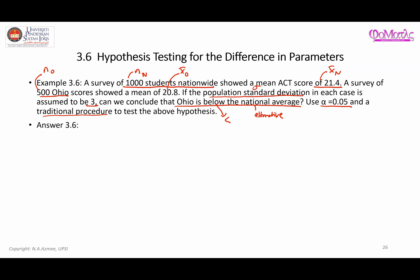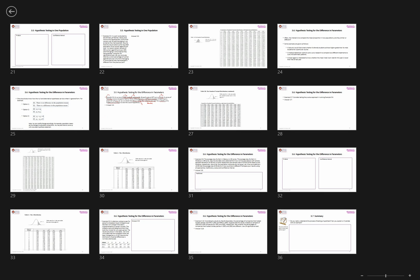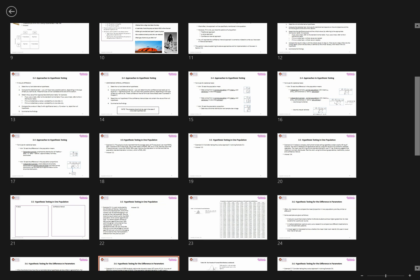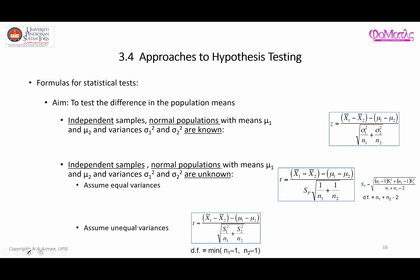To know which test statistic to use, refer to the previous slide. The aim is to test the difference in population means. The case here is independent samples, normal populations, with variances known. So this is the test statistic to use in the second step, and based on it you will refer to the standard normal distribution table to find the critical value or p-value.